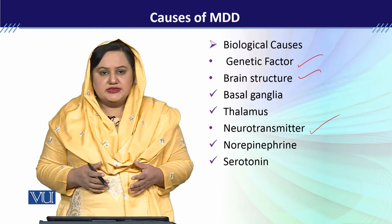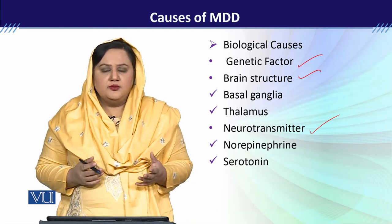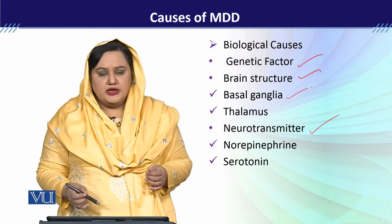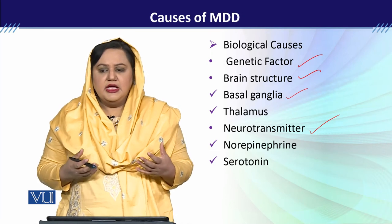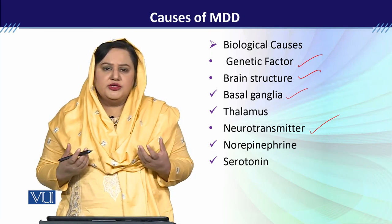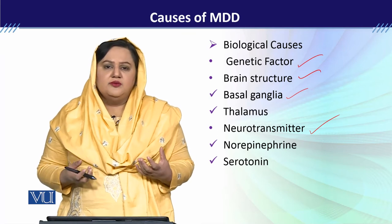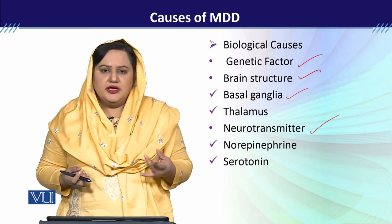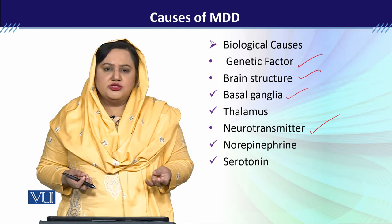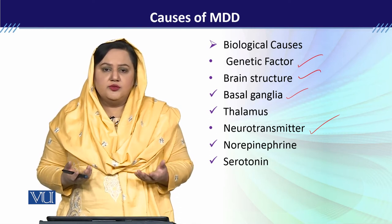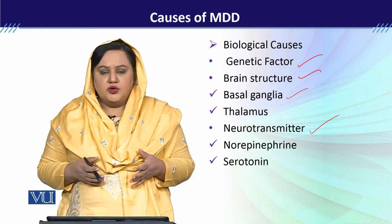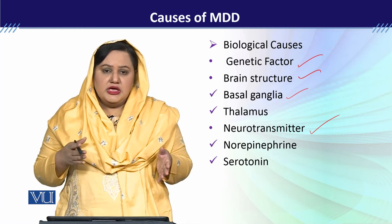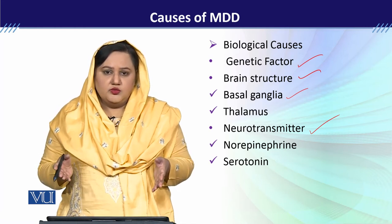Then we talk about brain structure. Certain abnormalities have been observed in the brain structure. In the basal ganglia, it is said that its volume is reduced in patients with depression. The basal ganglia controls motor activities, emotions, perception, and cognitive functioning. So if there is a problem in it, it will definitely contribute to depression. A reduced volume of the basal ganglia has been observed in depression patients.